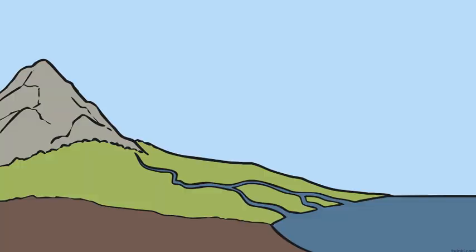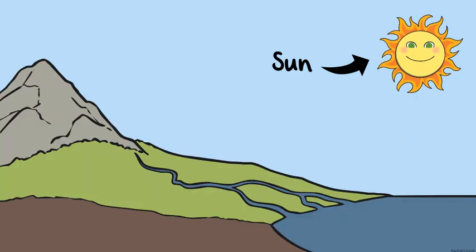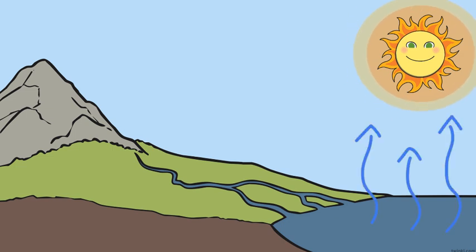And it all starts with the Sun. The heat of the Sun is what makes the water cycle work. The Sun's heat changes water from the Earth's ocean into water vapor. This part of the water cycle is called evaporation.